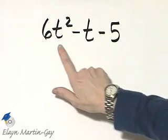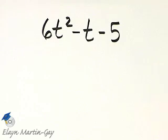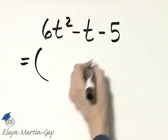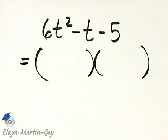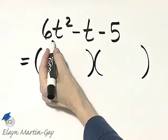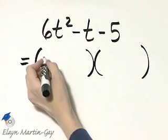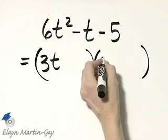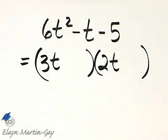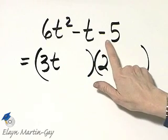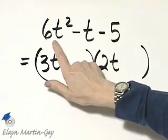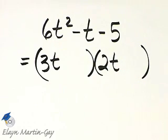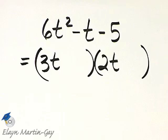Notice in this trinomial, there's no factors other than 1 or negative 1 that can be factored out. Let's use trial and error. I'll see if this factors into two binomial factors. First, we look for factors of 6T squared. I'll try 3T and 2T. If I've exhausted factors of negative 5 and I haven't factored it correctly yet, then I'll go to 6T and T. Right now, I'll choose 3T and 2T.